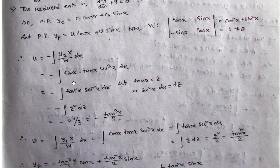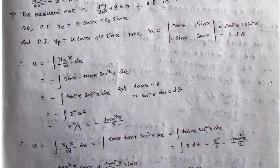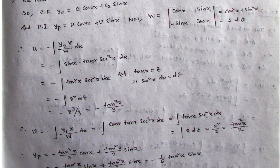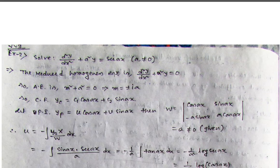Similarly we find the value of v: the formula is integration of y1·X divided by Wronskian. So y1 is cos x, X is tan x·sec³x, and the Wronskian is 1. This is a very easy problem. Any D operator problem can also be solved by this method — if you prefer this method, you can always use it and get an accurate answer. Now the second problem — same type but very frequently asked in exams: D²y/dx² + a²y = sec(ax).